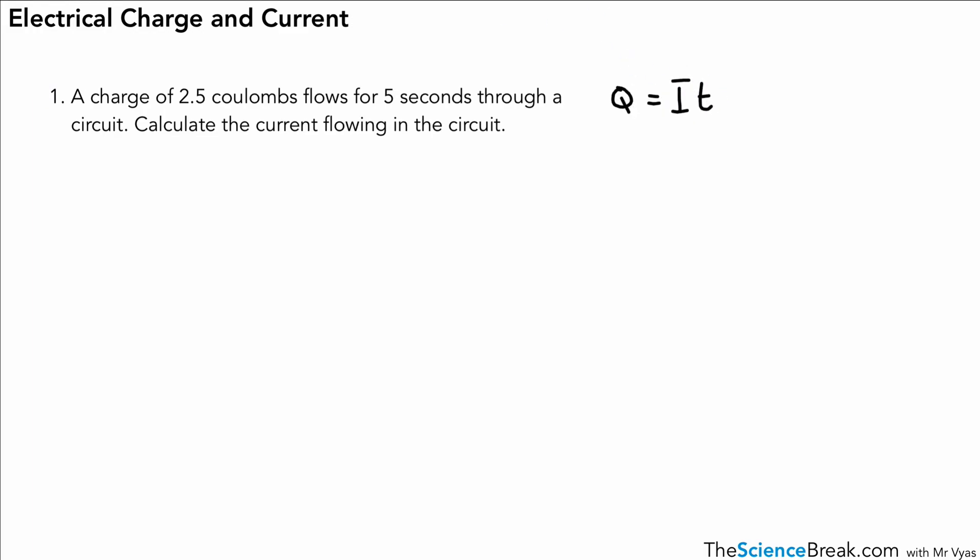So this time we need to remember our equation. It's not on the screen, but that's quite straightforward. Q equals IT. We've got a charge of 2.5 coulombs and a time of 5 seconds. And we want to calculate the current. So we have to rearrange our formula. And again, if you're not confident in rearranging, there's our formula triangle. However, you should know that it's I is Q divided by T if we rearrange.